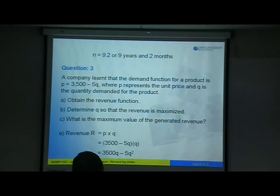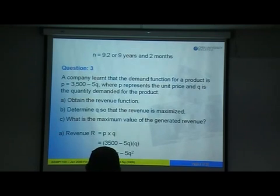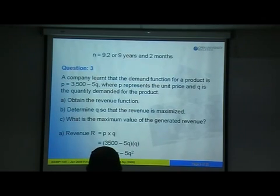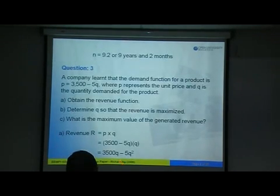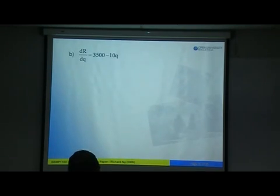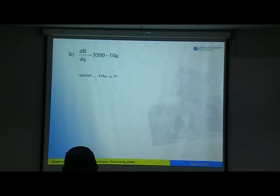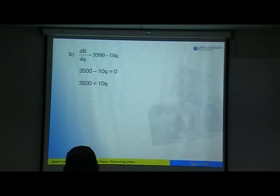This January paper is in the forum — you can download it with answers. Part B: determine Q so that revenue is maximum. From R equals 3,500Q minus 5Q squared, find dR/dQ to get 3,500 minus 10Q. Set equal to 0: 3,500 equals 10Q, therefore Q equals 350.